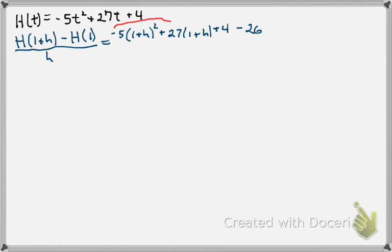We know from our table that H of 1 is 26. So just to make this clear, this whole piece here is our expression for H of 1 plus h, this 26 is what we get for H of 1. This is all still divided by h, and then we get to a point where we have some algebra to do.